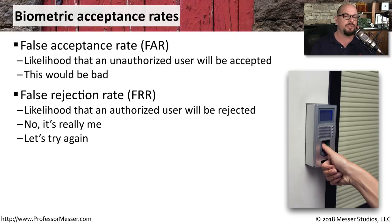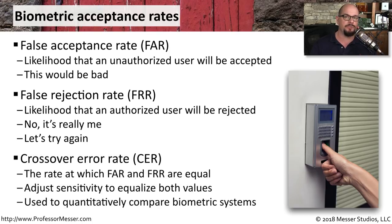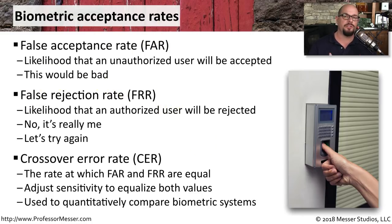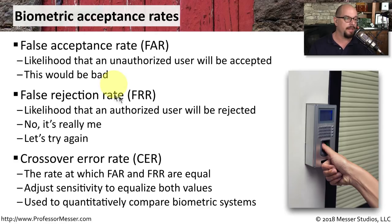One way to compare different biometric systems is by comparing the crossover error rate, or CER. This is the rate at which the false acceptance rate and the false rejection rate are both equal. You would generally try to adjust the sensitivity of the biometric system so that the FAR and FRR are both equal values.